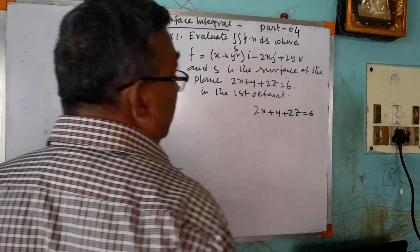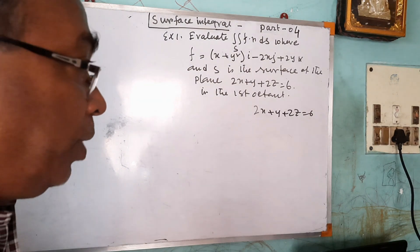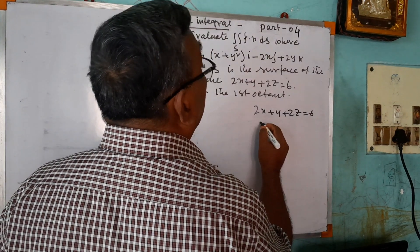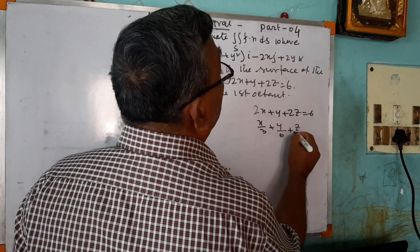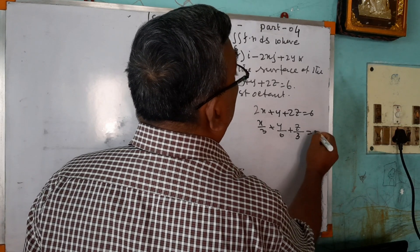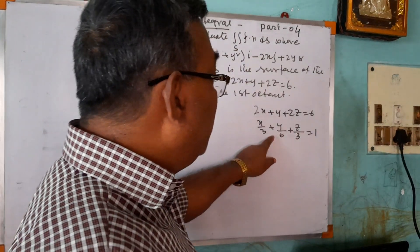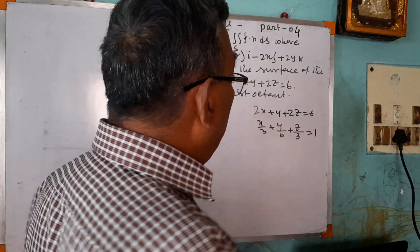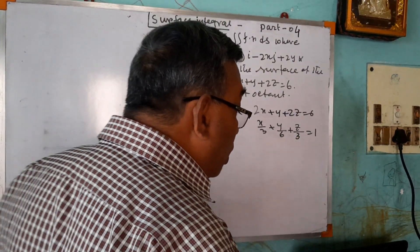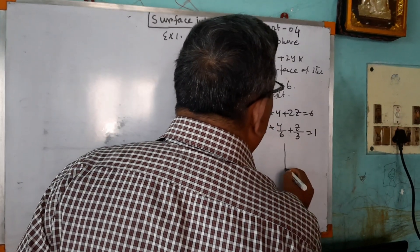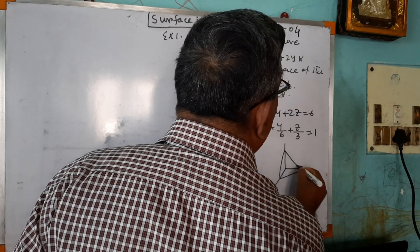Dividing both sides by 6 gives the intercept form: x/a + y/b + z/c = 1, which becomes x/3 + y/6 + z/3 = 1. That means this plane meets the x-axis at (3, 0, 0), the y-axis at (0, 6, 0), and the z-axis at (0, 0, 3). If we draw the diagram, this is the plane.